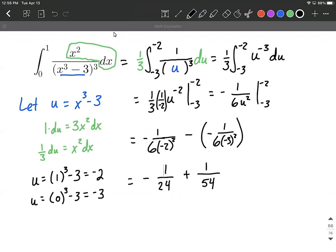To combine these fractions together we'll need a common denominator. The common denominator in this case turns out being 216. So to end up with 216 as this common denominator we're going to multiply the first fraction by 9 over 9 and the second fraction is going to be multiplied by 4 over 4. This will leave us with negative 9 over 216 plus 4 over 216 which ultimately works out to be negative 5 over 216.